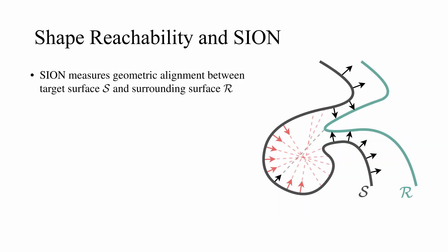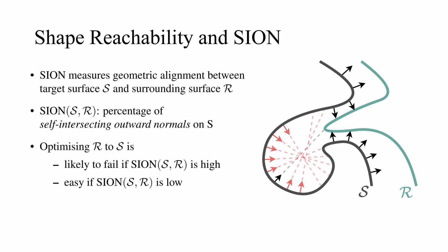Based on this insight, we propose the SION metric to measure the geometric alignment between a target surface S and a surrounding surface R. We define SION as the percentage of self-intersecting outward normals on shape S, shown in red in the figure, where self-intersecting means the normal hits S before it hits R. If SION is high, then the geometry of S and R are not aligned, so SDF losses are likely to fail to optimize R into S. If SION is low, then optimization should be easy.